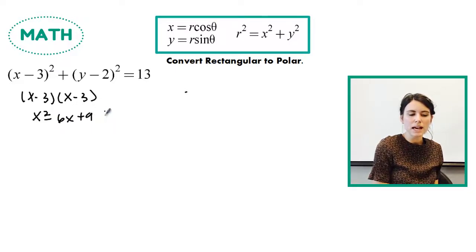And then I'm going to be adding that to this one foiled out. So y minus 2 times y minus 2 is going to give me y squared minus 4y plus 4, and that all is equal to 13.